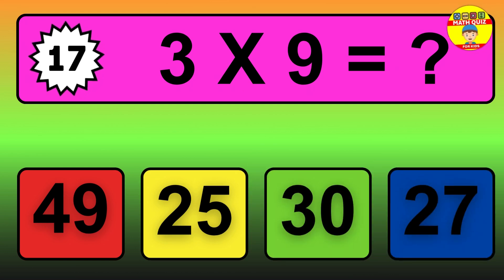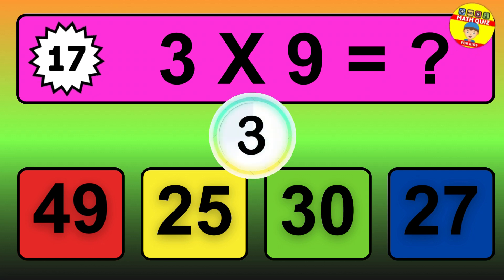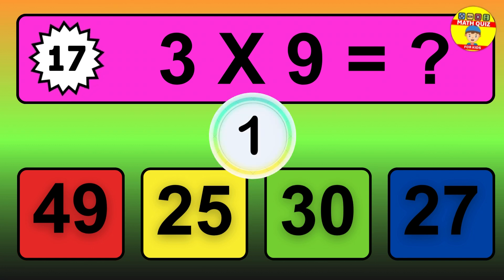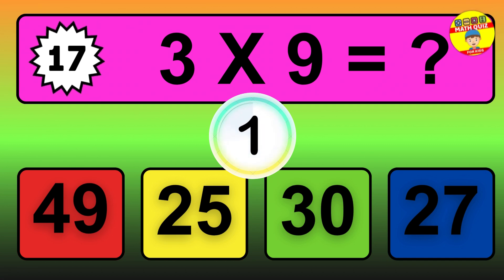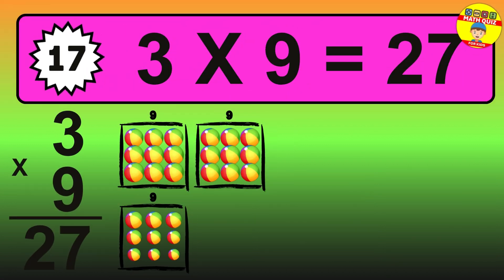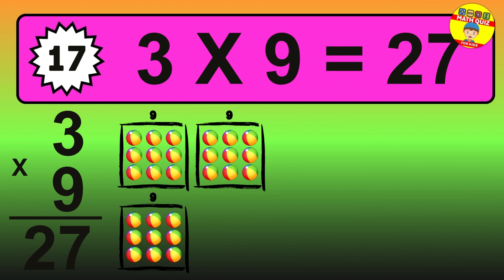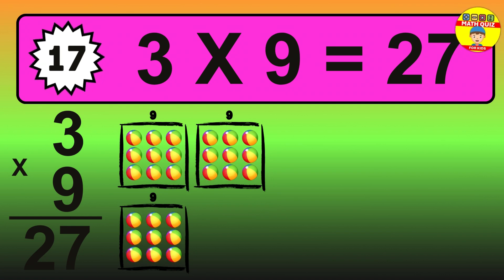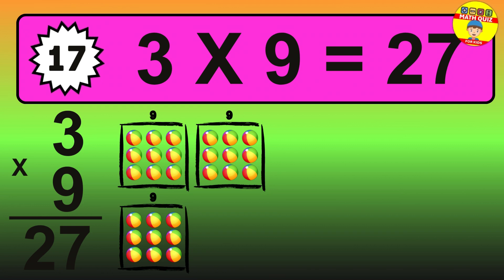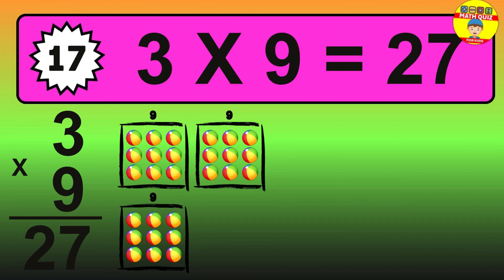Question 17. 3 times 9 equals what? The answer is 3 times 9 is 27. To calculate, we have 3 groups with 9 balls each one. So, how many balls do we have? 27 balls.